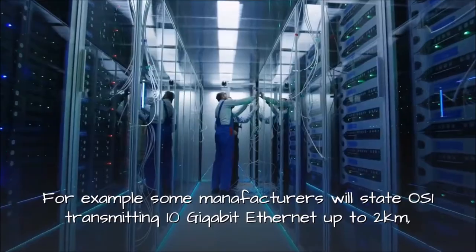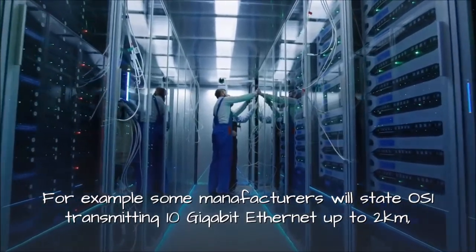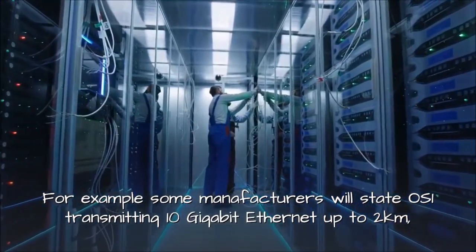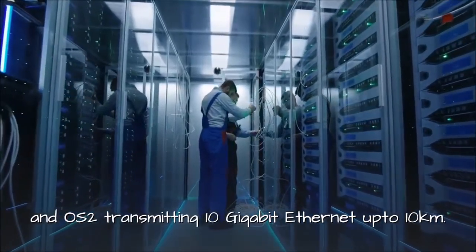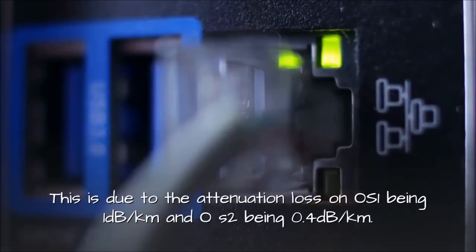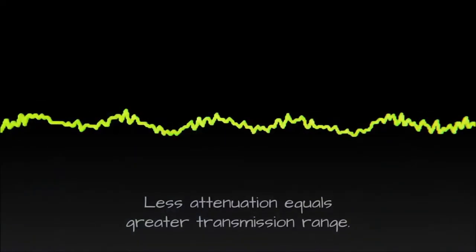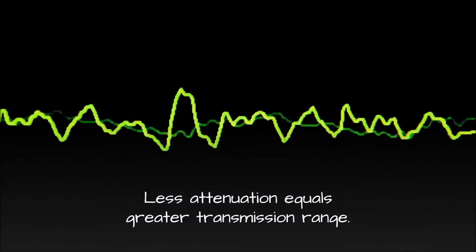For example, some manufacturers will state OS1 transmitting 10 gigabit Ethernet up to 2 kilometers, and OS2 transmitting 10 gigabit Ethernet up to 10 kilometers. This is due to the attenuation loss on OS1 being 1 decibel per kilometer and OS2 being 0.4 decibels per kilometer. Less attenuation equals greater transmission range.